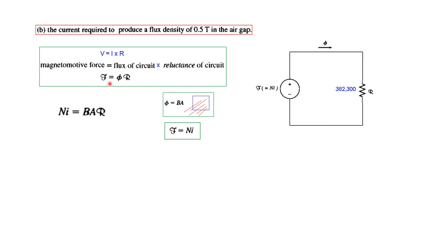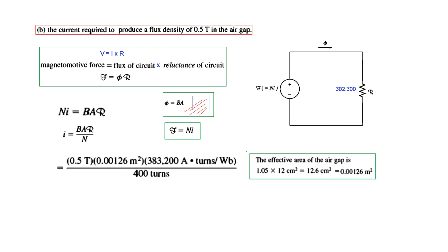Now we have all the values. The required flux density B is 0.5 tesla. The area used is the increased air gap area of 0.0126 m² due to fringing. The total reluctance calculated earlier is used, and the number of turns N is 400. Plugging all values in, the current required is 0.602 ampere.